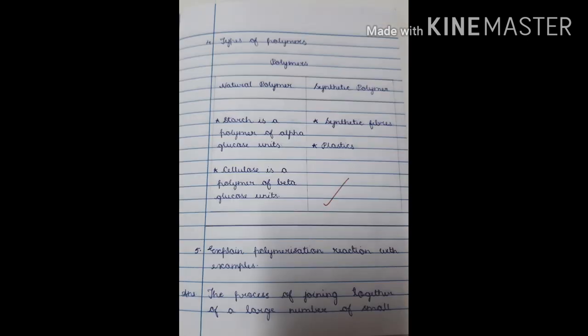Fourth question: types of polymers — natural polymer and synthetic polymer. Natural polymer example: starch is a polymer of alpha glucose units; cellulose is a polymer of beta glucose units. Synthetic polymer examples include synthetic fibers and plastics.